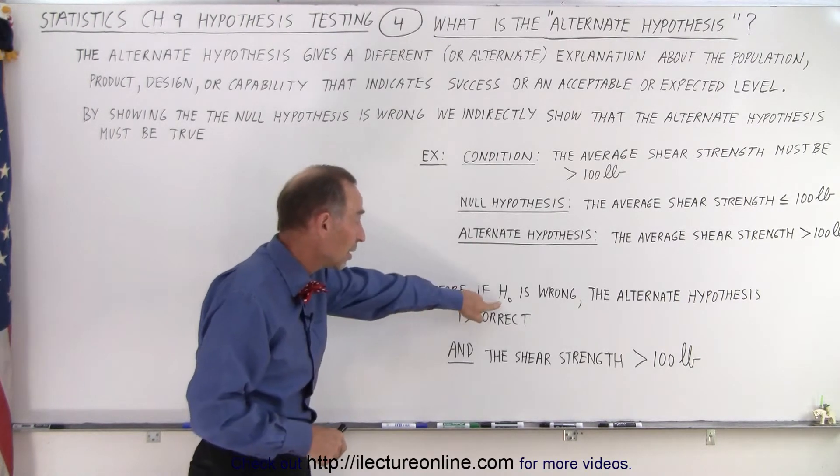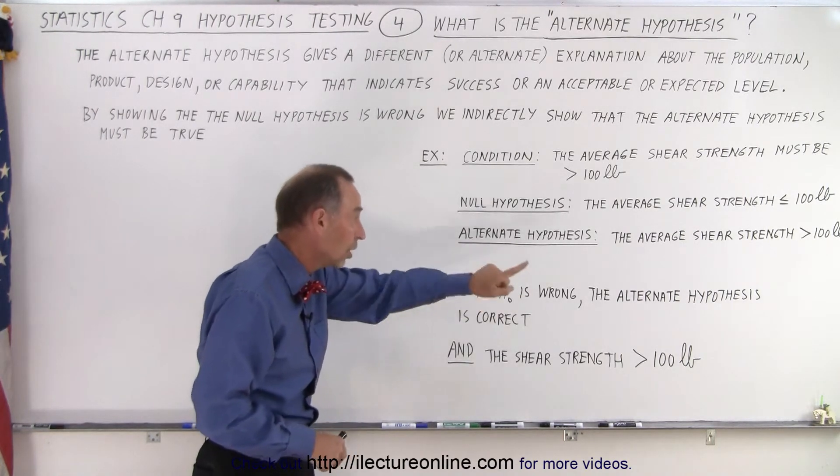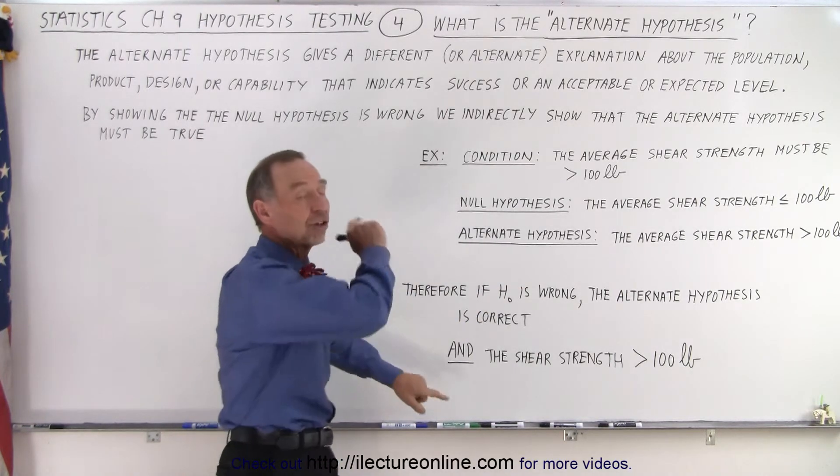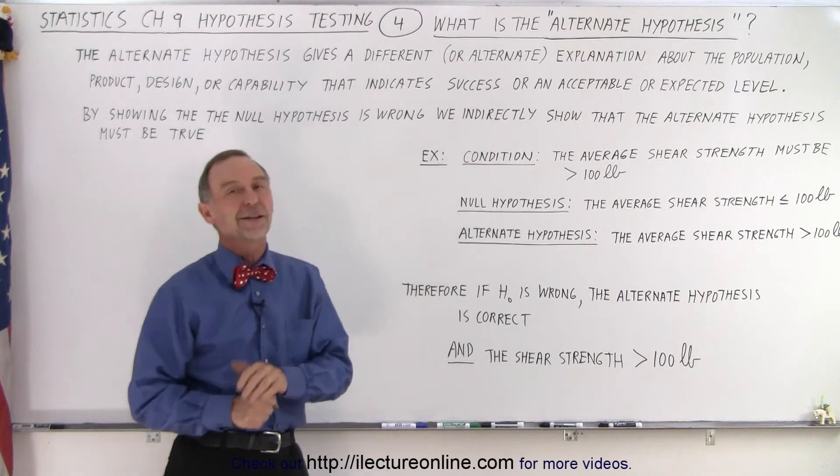So therefore, if the null hypothesis is wrong, the alternate hypothesis is correct, and in this case, the shear strength is therefore greater than 100 pounds.